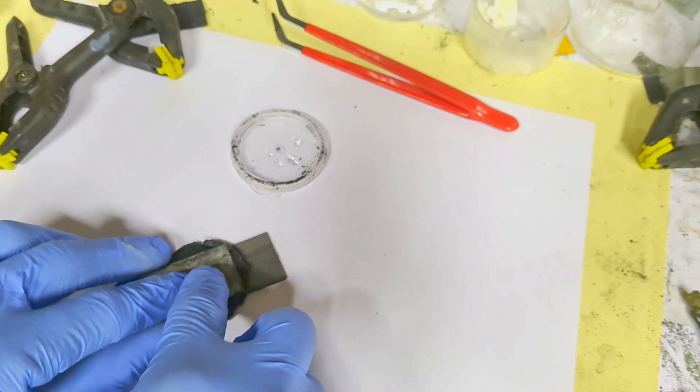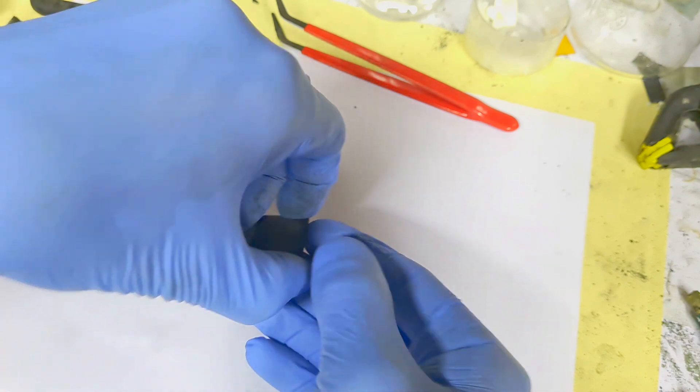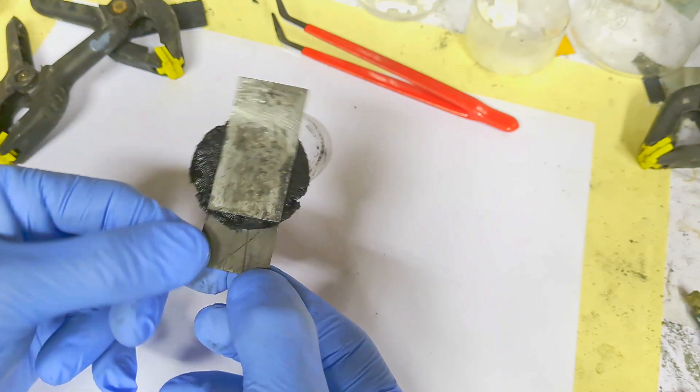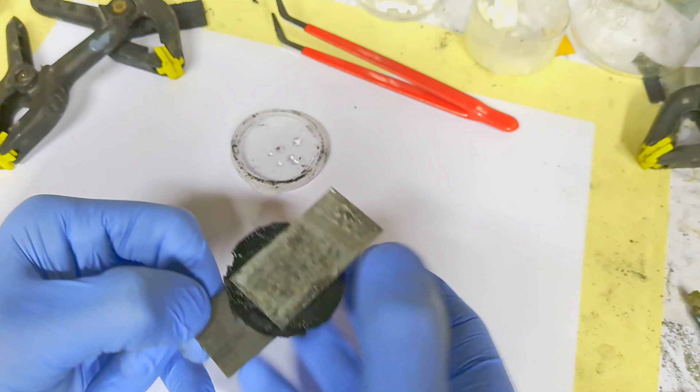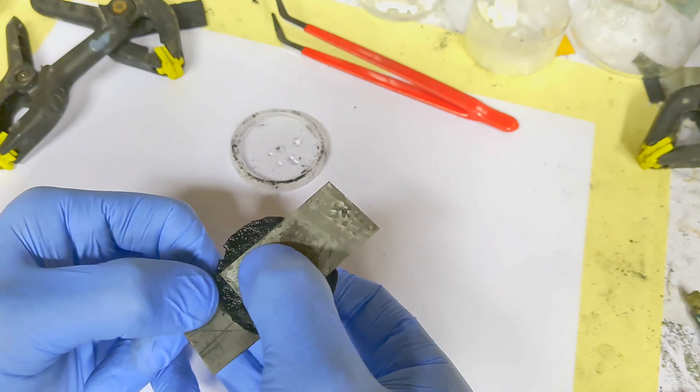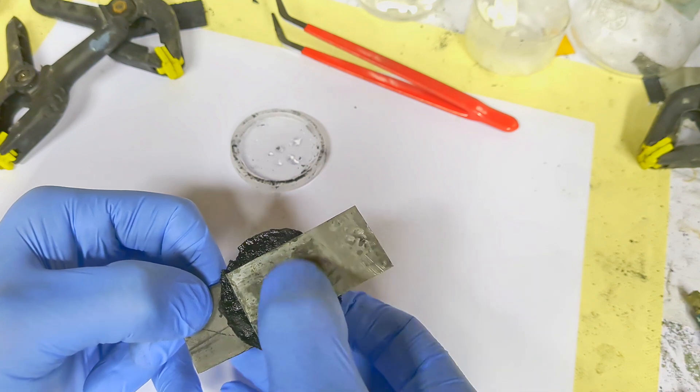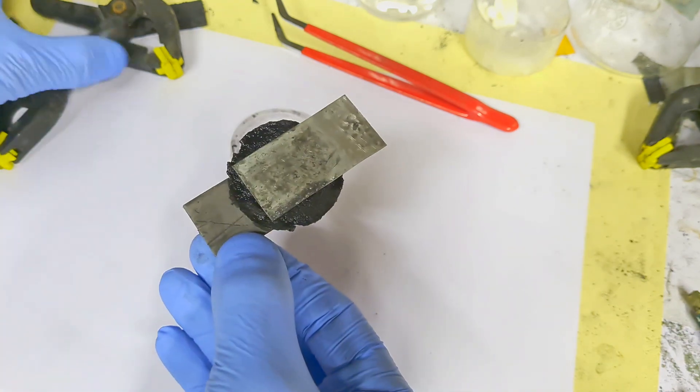And that's it. The positive current collector, the power gel in between, and for the last, on the top, the negative current collector.